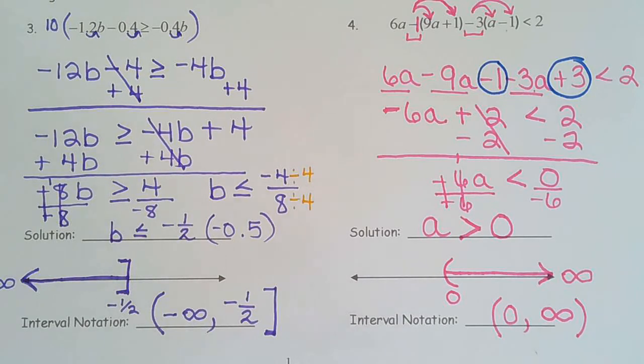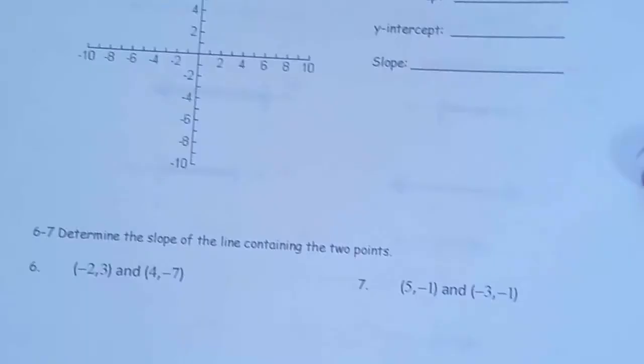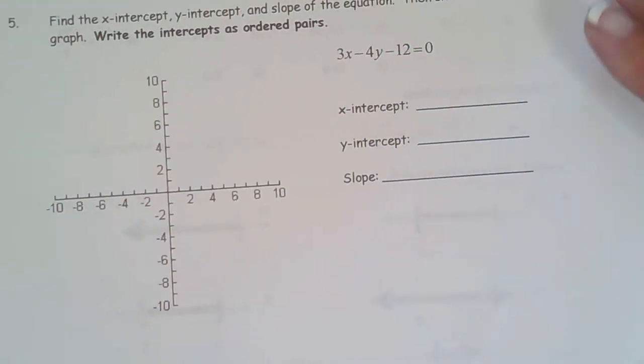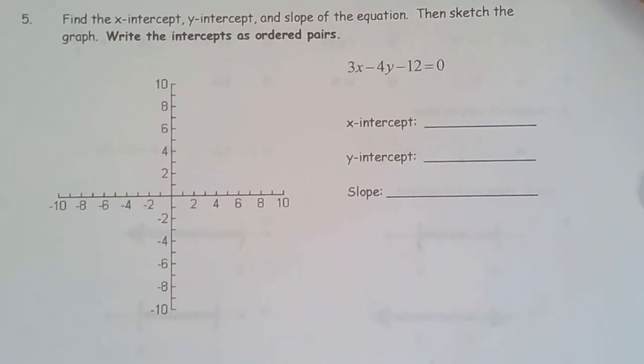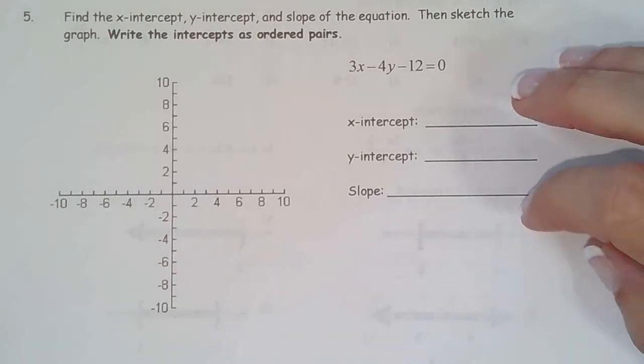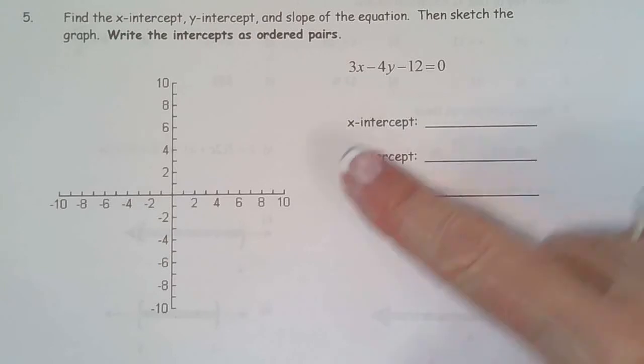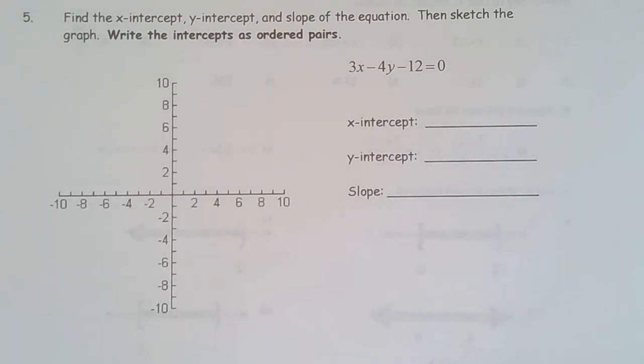So that is the end of inequalities. So let's go ahead and go to the next page. So number five is a review of lesson two, seven, where we learned how to find x-intercepts, y-intercepts. And then it's also a review of lesson two, three. So this is kind of a combination of section two, three and two, seven, because two, three is where we learn to graph lines. Two, seven is where we learn to do x and y-intercepts.